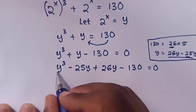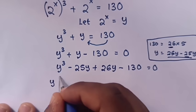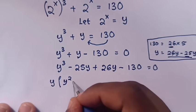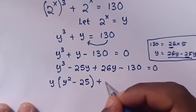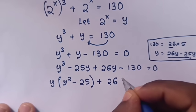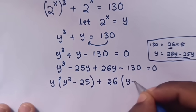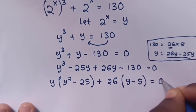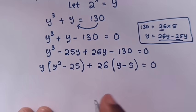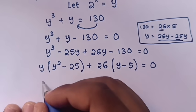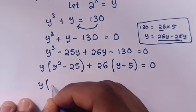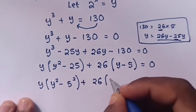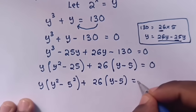Because y is common, we take y out of the bracket. This divided by this is y squared, this divided by this is minus 25. Plus, here 26 is common, so 26y divided by 26 is y, and this divided by this is minus 5, is equals to 0. Then from here, 25 is 5 power 2, so it will be y bracket y squared minus 5 squared, bracket plus 26 bracket y minus 5 is equals to 0.